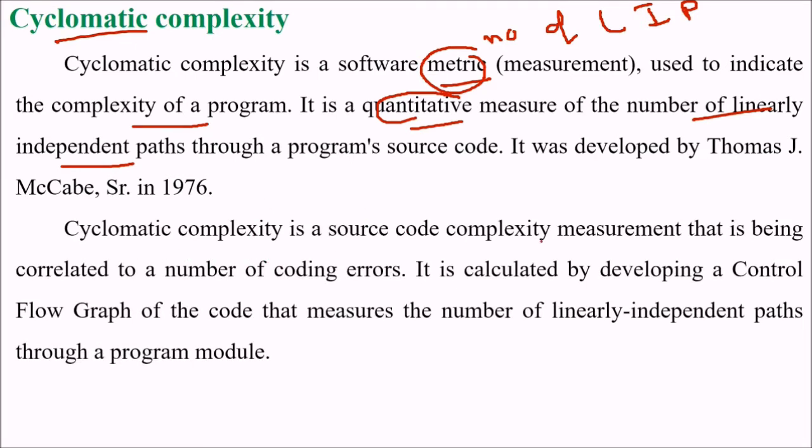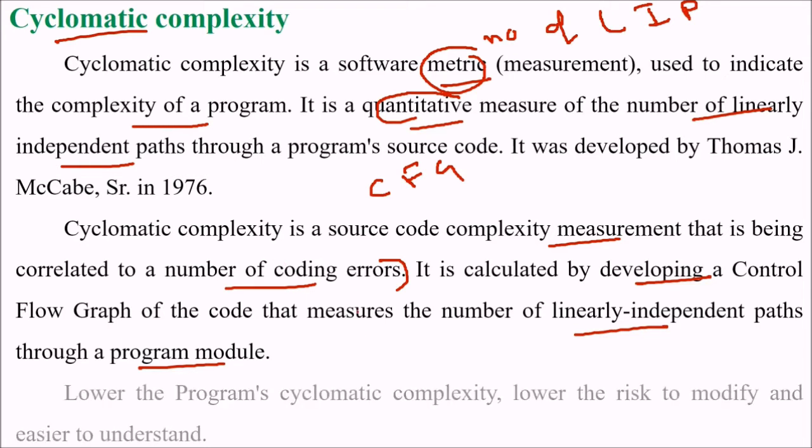This cyclomatic complexity is a source code complexity measurement that is being correlated to the number of coding errors, and it is calculated by developing a control flow graph (CFG) of the code that measures the number of linearly independent paths through our program module. Linearly independent path is very important. If the cyclomatic complexity number is lower, there is a lower risk to modify and the understanding would be good in the program.